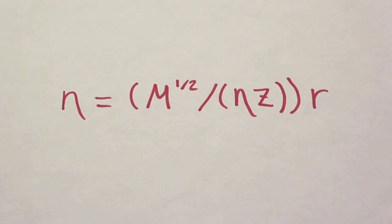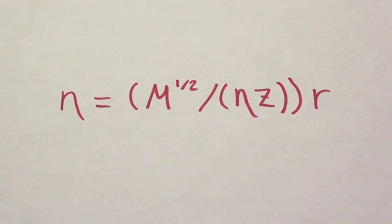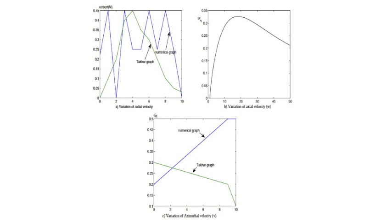With this model, as eta increases, radial velocity fluctuates and axial velocity decreases, as azimuthal velocity reaches its maximum value when eta equals 10 and then decreases as eta grows larger.